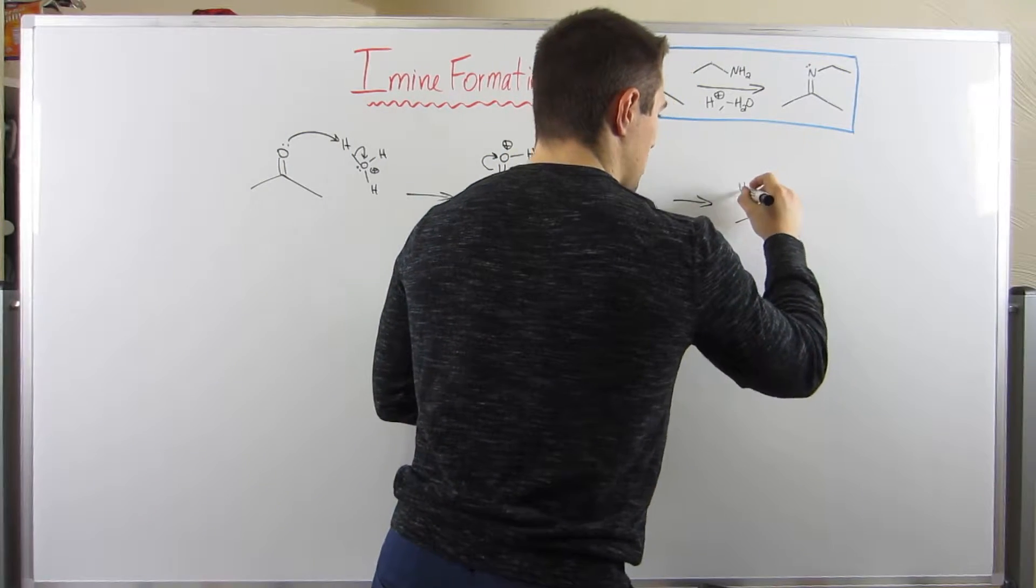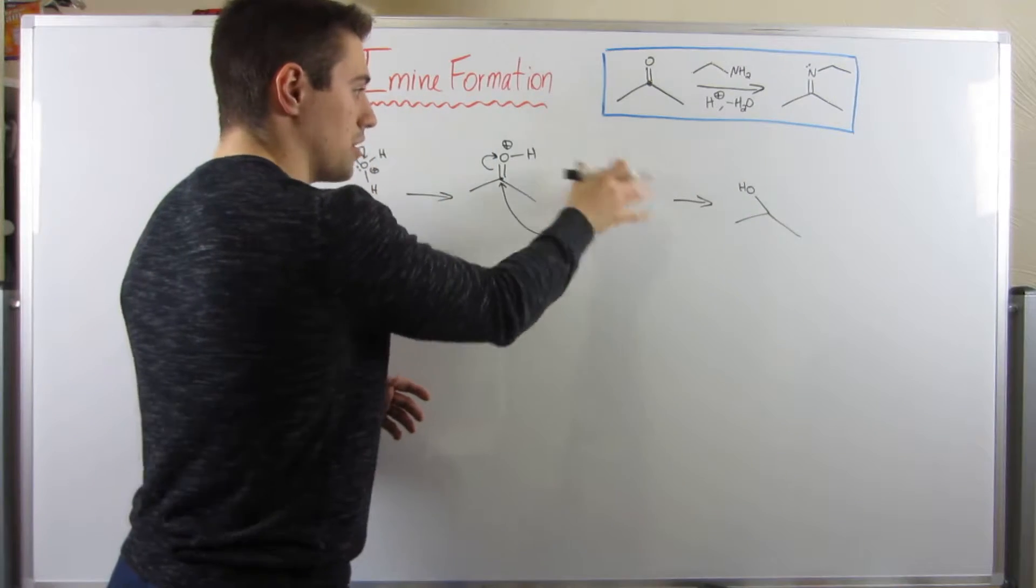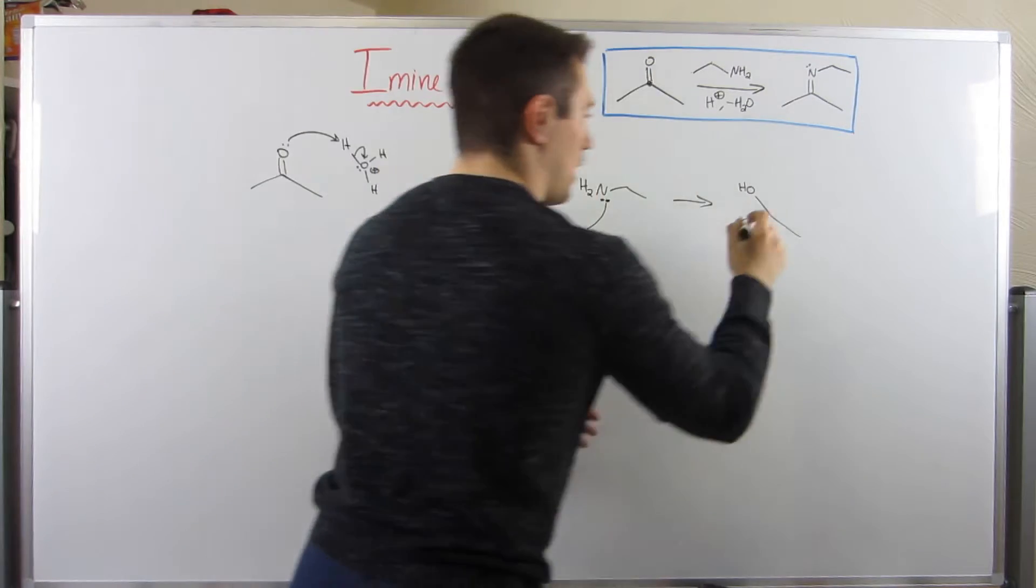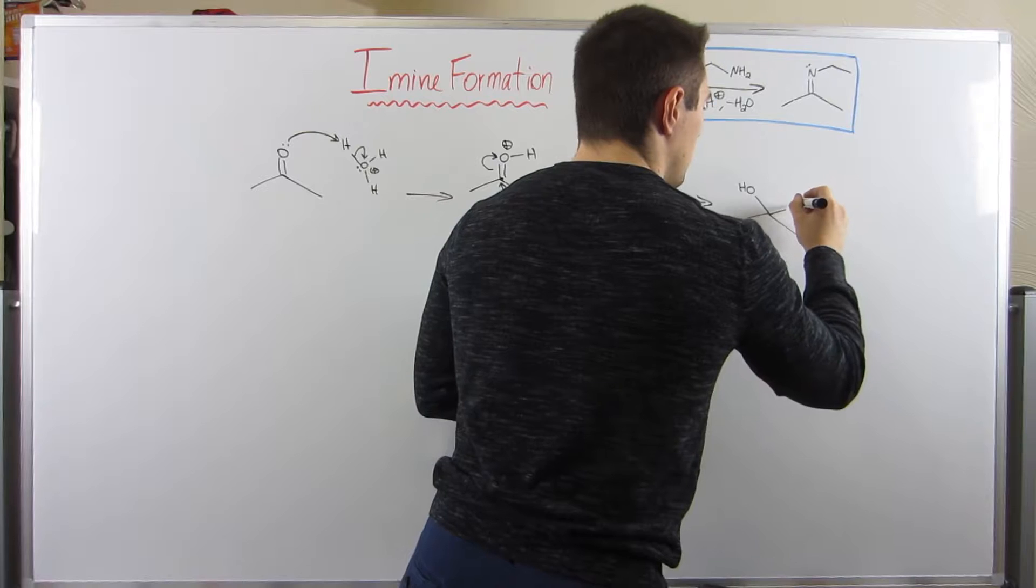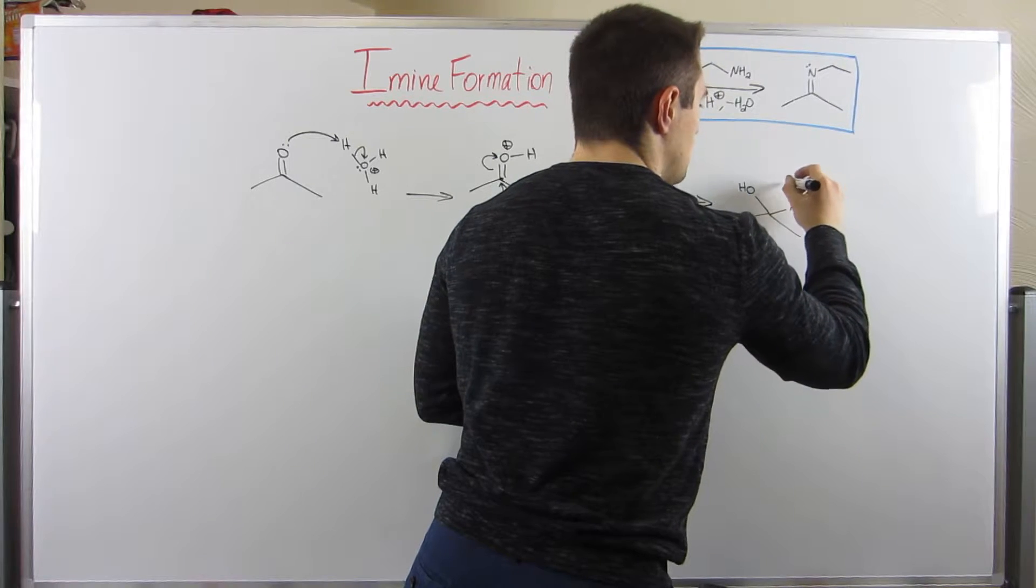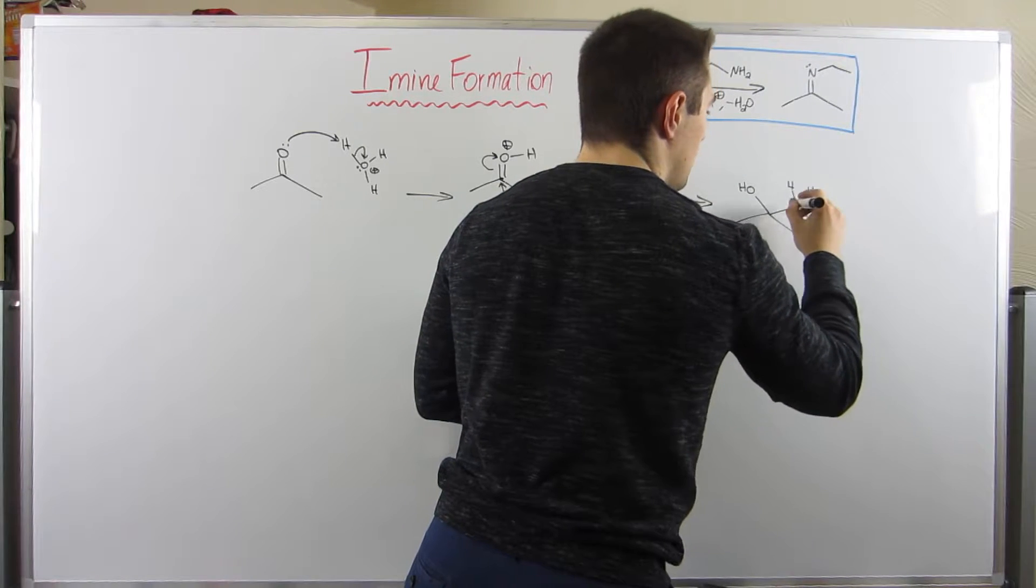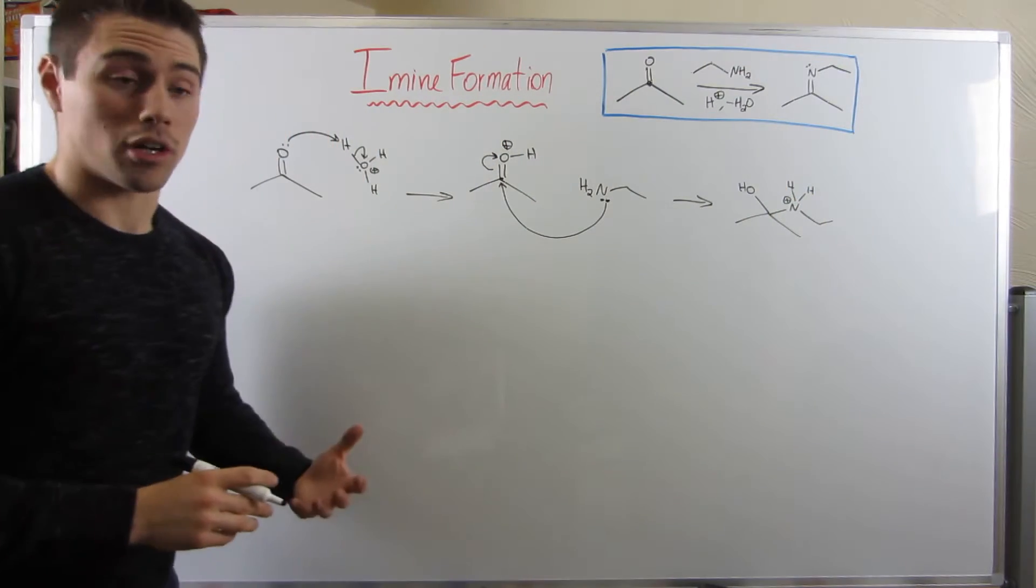I'm going to draw my OH to the left. I'm going to draw the nitrogen piece I just added to the right. So we have the nitrogen attached to two hydrogens and his two carbon alkyl piece. He now has a plus charge.